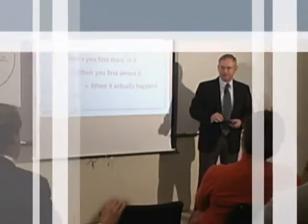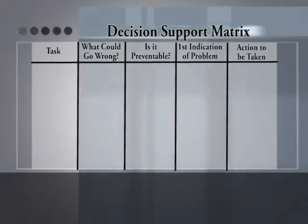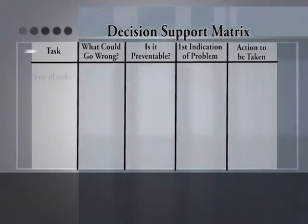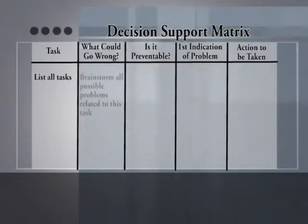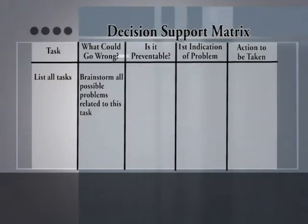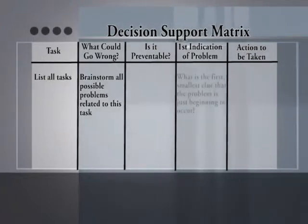That's what I'm going to show you right now. We're going to look at a tool I call the Decision Support Matrix. In the left-hand column, we list all of the tasks in our project — every single one of them. Then for each of those tasks, we brainstorm all the possible problems we could have — what could go wrong.